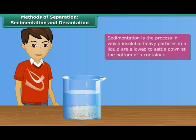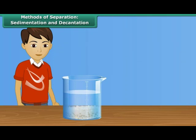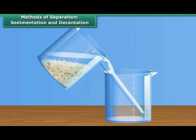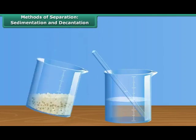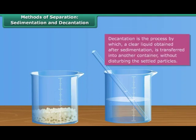This process of deposition of mud at the bottom of the beaker is called sedimentation, and the layer of mud is called the sediment. Jack separated the upper layer of water from the mixture by gently pouring the clear water into another beaker without disturbing the sediment. This process of separation of a liquid from the sediment is called decantation.